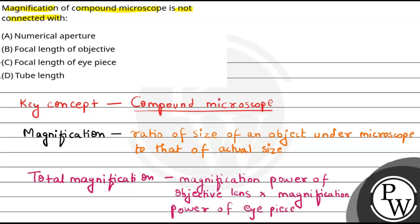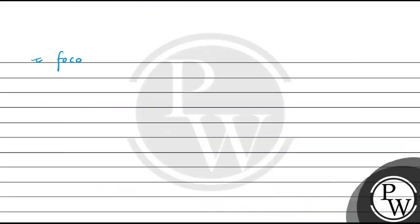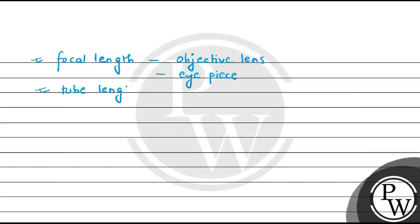If we talk about the factors included, then the magnification power of the objective lens requires the focal length of the objective. We also need the focal length of the eyepiece for the magnification power. And the total magnification also includes the tube length. So we need these factors.